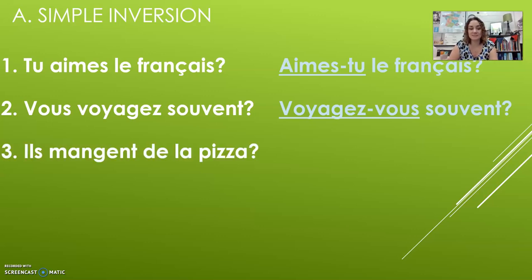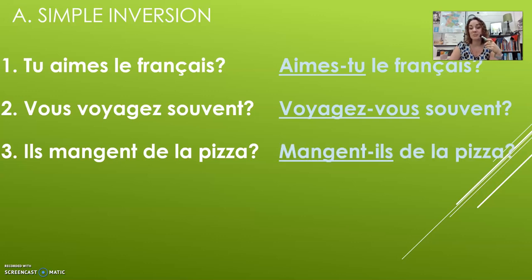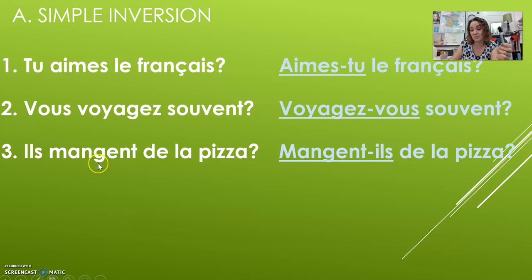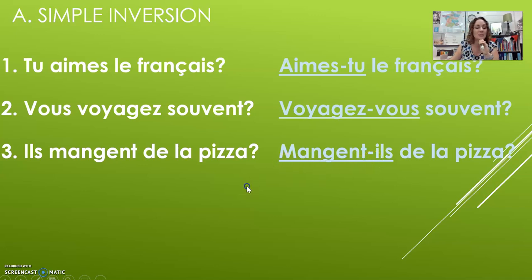«Ils mangent de la pizza?» — my subject is «ils», my verb is «mangent», flip them, put a hyphen in between. «Mangent-ils de la pizza?» Notice when pronouncing this, I do hear the letter T more. Normally you never hear the -ent ending, but here for liaison purposes I say «Mangent-ils de la pizza?»